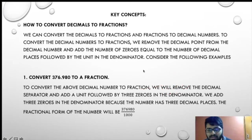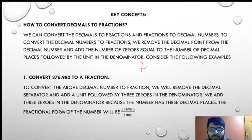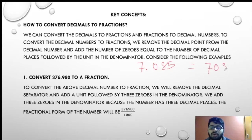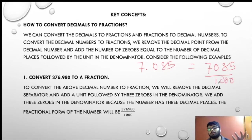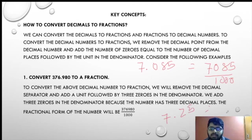Let us take another example. That is 7.085. This will be 7085 upon 1000 — how many zeros? Three zeros, so 1, 2, 3, 0 and 1. Simple. Next example: 7.25.